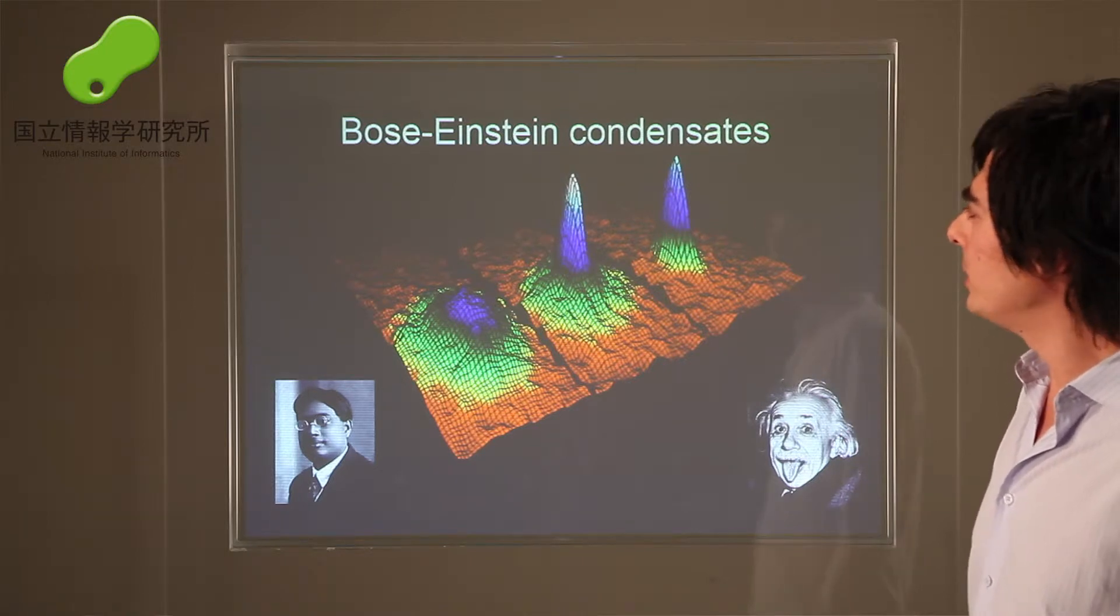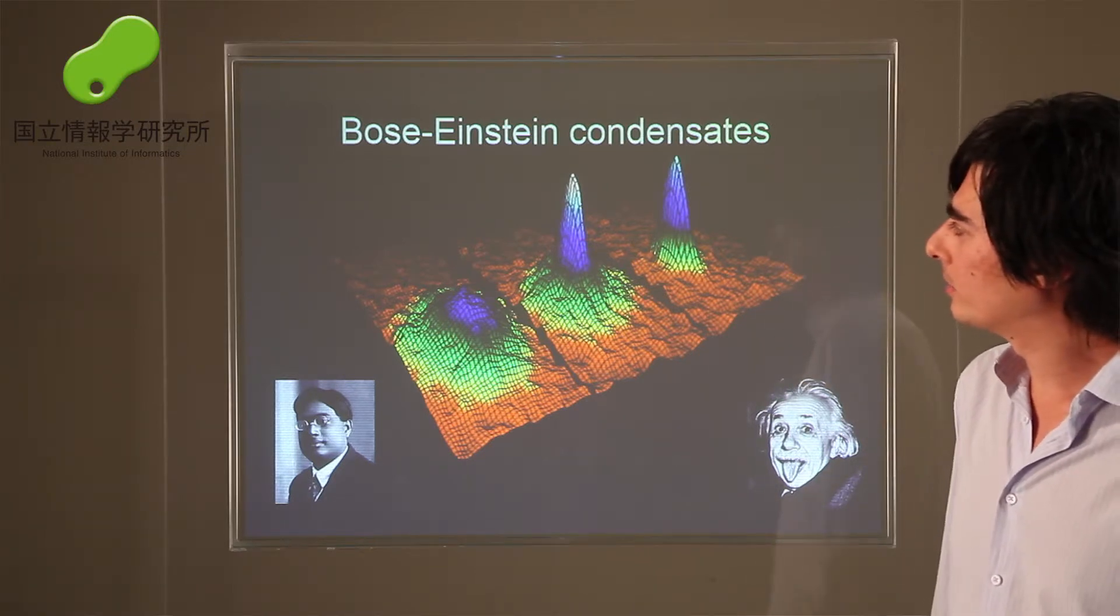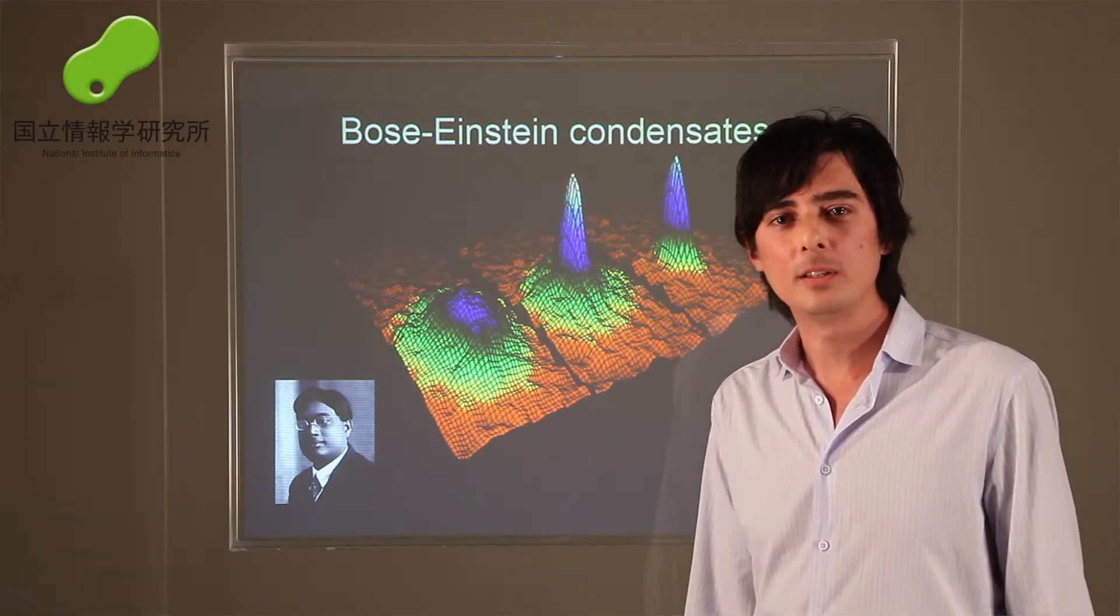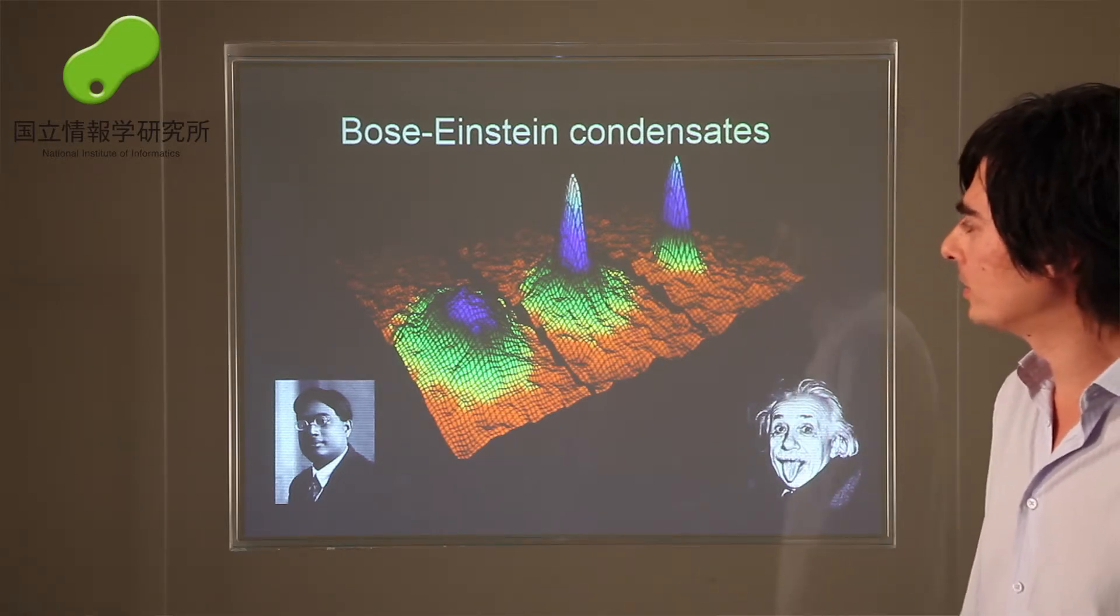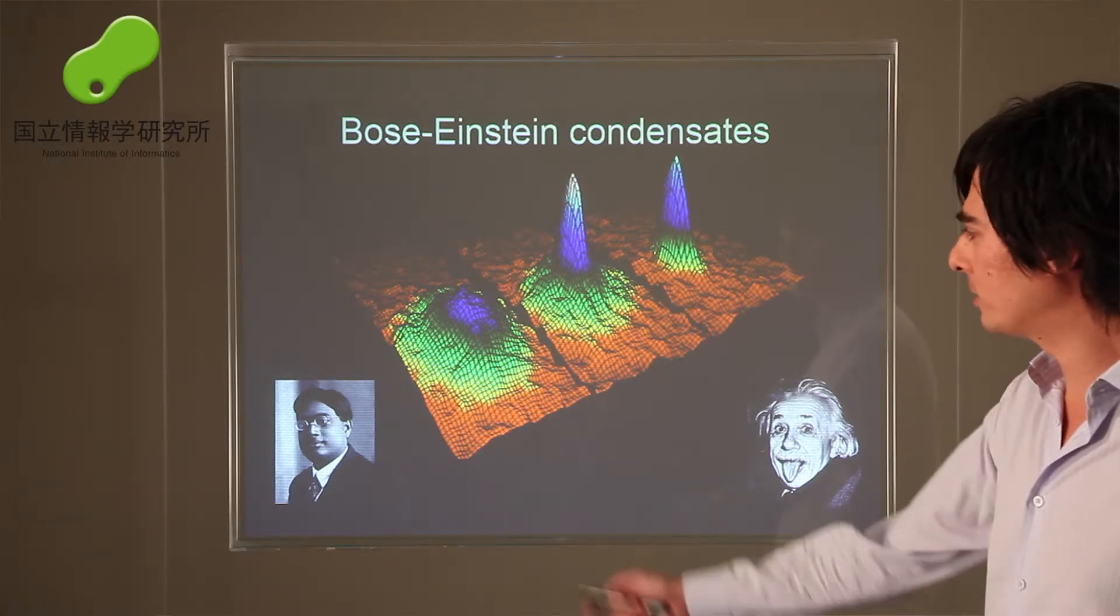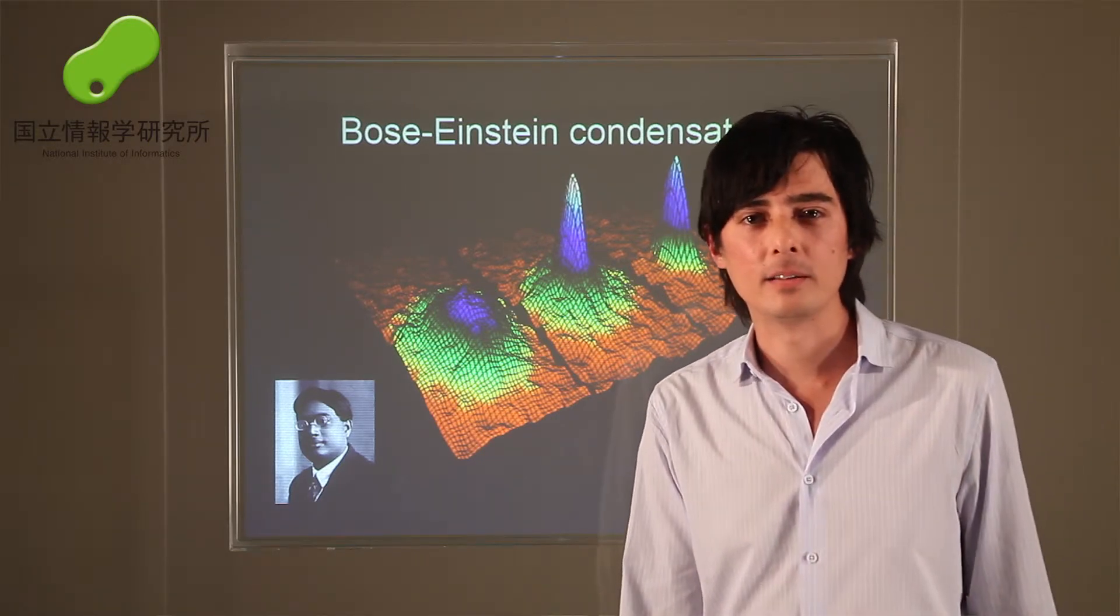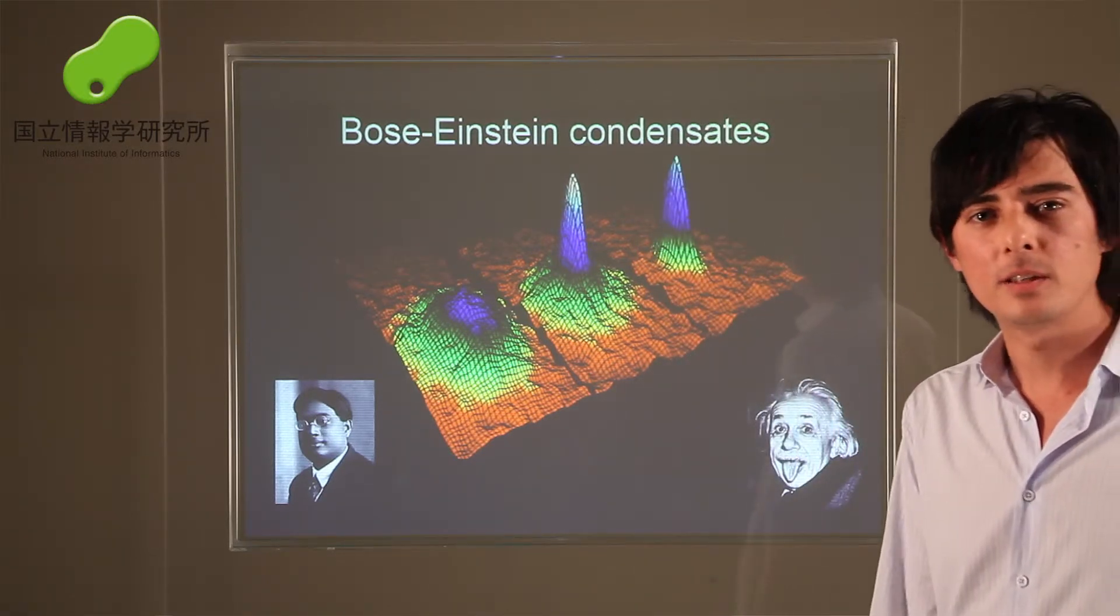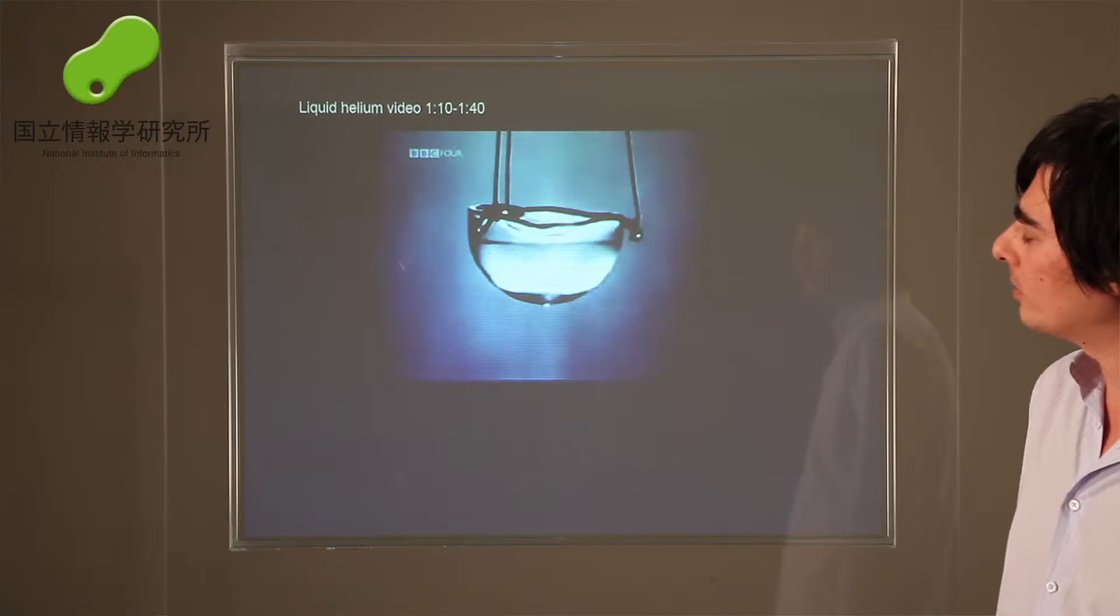My research in particular focuses on basically none of those four examples from the previous slide, but a kind of new state of matter that's only been recently realized. This is called Bose-Einstein condensates. Bose-Einstein condensates were predicted by two guys, Bose and Einstein, back about 80 years ago. This was only realized a couple of decades prior to now.